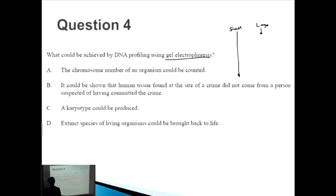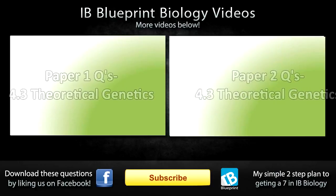With gel electrophoresis, we're usually thinking about paternity testing as well as crime scene analysis - those are the two main ones. We're talking about crime here, so the correct answer is B. The other options are wrong: chromosome number is counted in a karyotype, not gel electrophoresis. A karyotype could be produced - that's also about karyotypes, incorrect. Bringing extinct species back to life is DNA cloning, not gel electrophoresis.